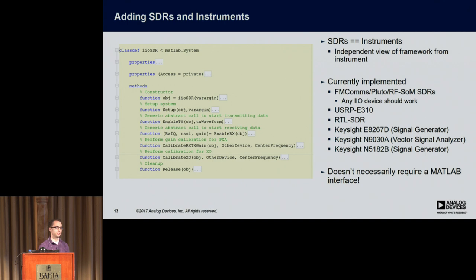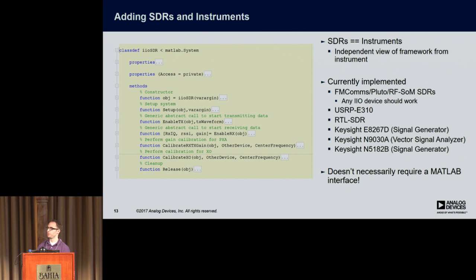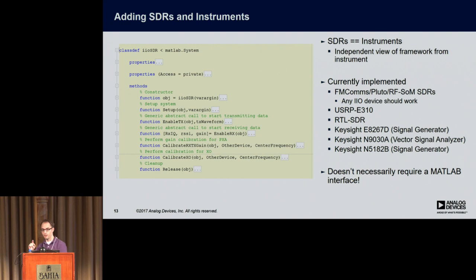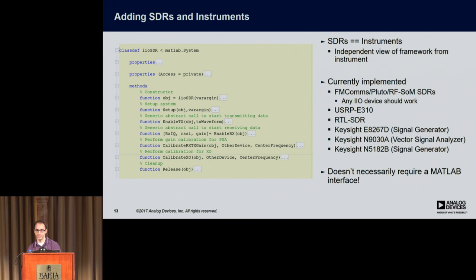Adding SDRs and instruments is actually really simple in this framework. You just create a class — yes, MATLAB has classes; a lot of people don't know that. You implement a few methods: setting up the device, transmitting data, receiving data. If you only have a receive-only device, the tests are designed so those methods just won't be called. We've implemented this for basically all the SDRs — FMcomms, Pluto, and RFSOM-based devices — and basically any libiio device should work in this framework. We've also implemented this class for the E310 and RTL-SDR, along with some instruments.